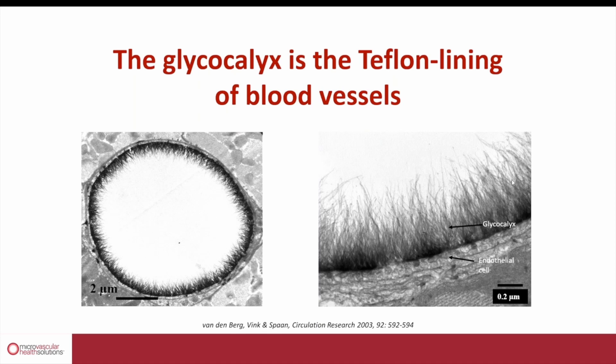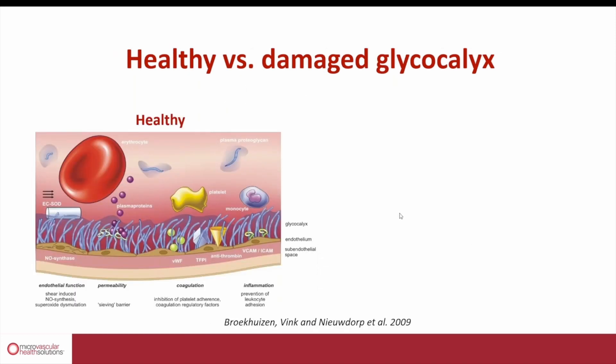These polysaccharides — predominantly heparin-sulfate polysaccharides and hyaluronic acid — bind a lot of very stable gel-like matrix that prevents direct contact between the circulating blood and the luminal surface of the endothelium.